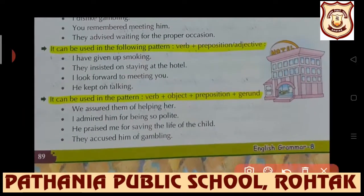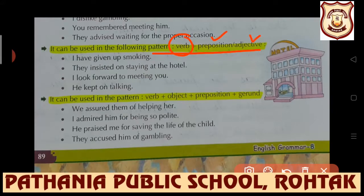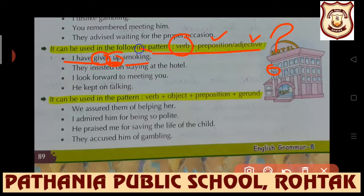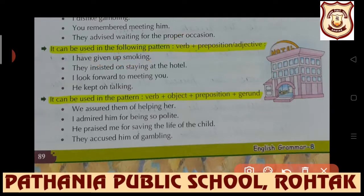The gerund can be used in the following pattern: verb plus preposition plus gerund - for example, 'I have given up smoking' - 'given' is the verb form, 'up' is the preposition, and 'smoking' is the gerund. 'They insisted on staying at the hotel.' Another pattern: 'I look forward to meeting you' - 'look' is the verb, 'forward to' is the preposition, and 'meeting' is the gerund.